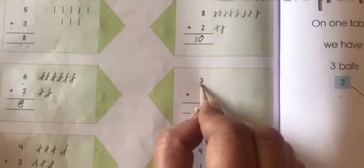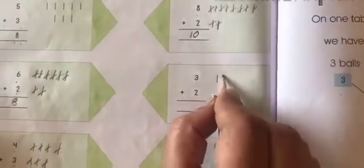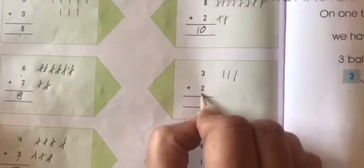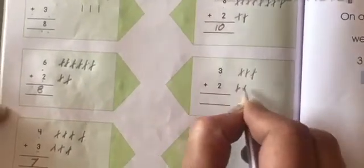Now which number is this? 3. 1, 2, 3. And 2. 1, 2. Count: 1, 2, 3, 4, 5. Write here 5.